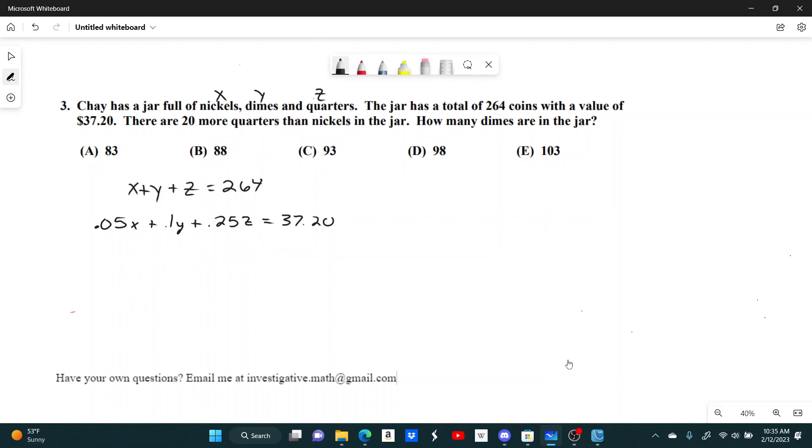the number of quarters minus the number of nickels equals 20. Both of those are the same equation. I wanted to show you both ways since some are easier for people to see.